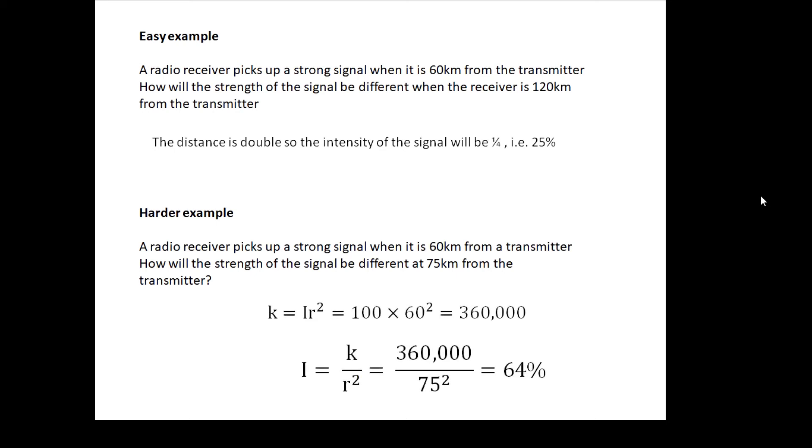Okay, so first of all I say k = I × r² because I is k/r². And I'll say at 60 kilometers it's 100 percent, and that gives me my value of k: 360,000. Knowing this, I can then work out the intensity at any distance. And at 75 kilometers then it's 360,000 divided by 75 squared, which is 64 percent.